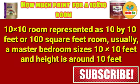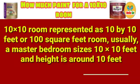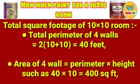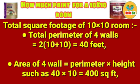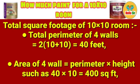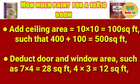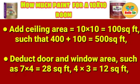A master bedroom size is typically 10 by 10 feet with a height of around 10 feet. To calculate total square footage, first find the perimeter of the four walls: 2 × (10 + 10) = 40 feet. Area of four walls equals perimeter × height: 40 × 10 = 400 square feet. Ceiling area equals 10 × 10 = 100 square feet.